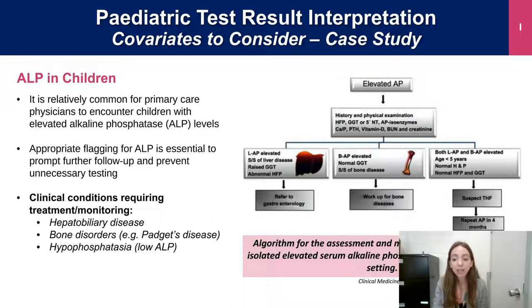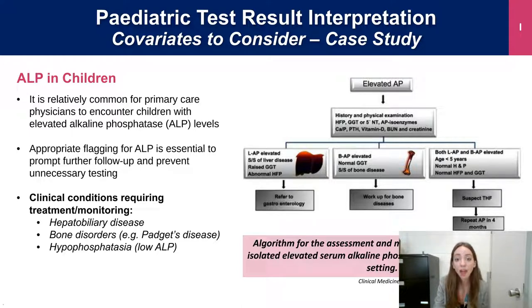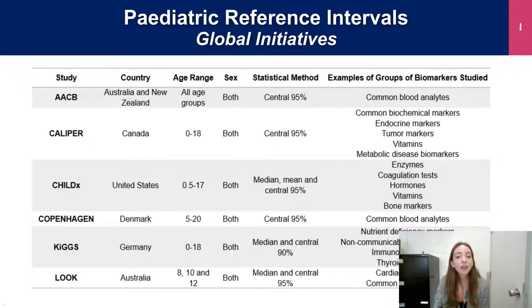Elevated ALP can be due to bone disease as well as liver disease, which can cause referral to gastroenterology. For a primary care physician, it's important to identify these elevations immediately so that the patient can go through the proper course of treatment and identification of underlying conditions. Various initiatives have sought to address this gap in pediatric reference standards, given the clear need for age and sex-specific test interpretation.